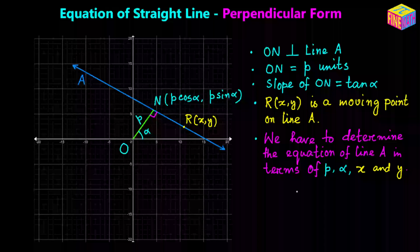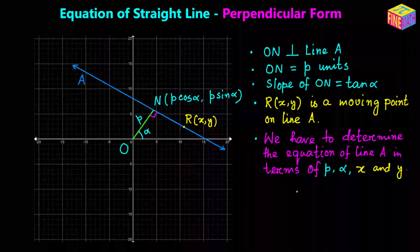Now let's try to understand what this form is. Two pieces of information will be provided to create the equation of the straight line. Suppose the straight line is line A — the blue colored line in this diagram — and the distance of this line from the origin, which is ON, will be provided. In this diagram I have denoted that as phi (p) units. The second piece of information is the angle that ON makes with the positive direction of the x-axis, which is alpha.